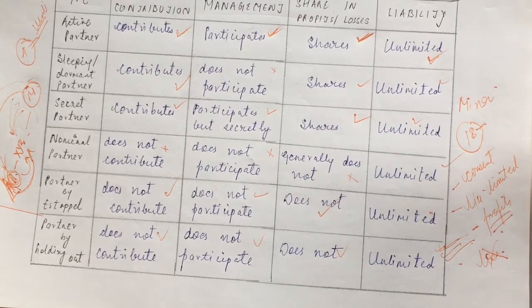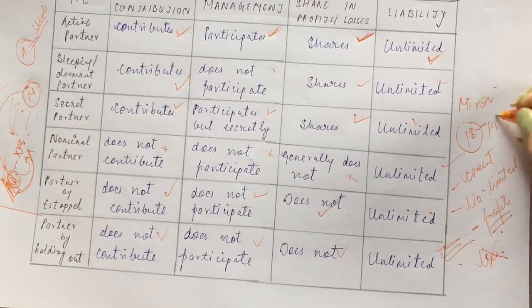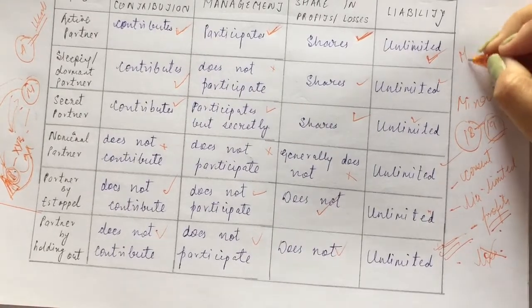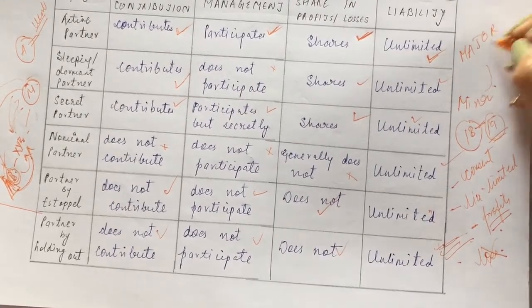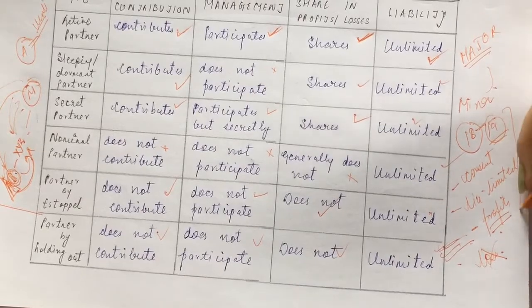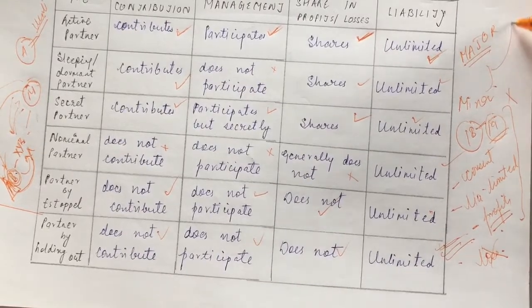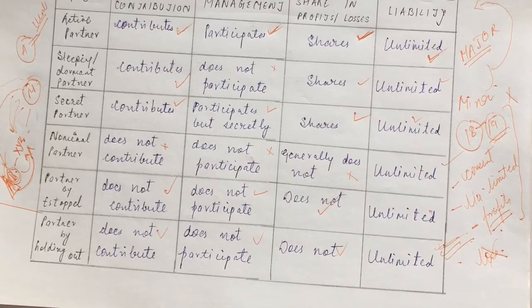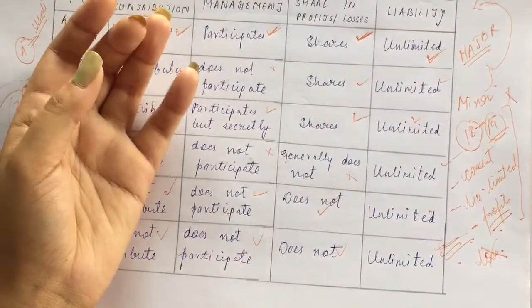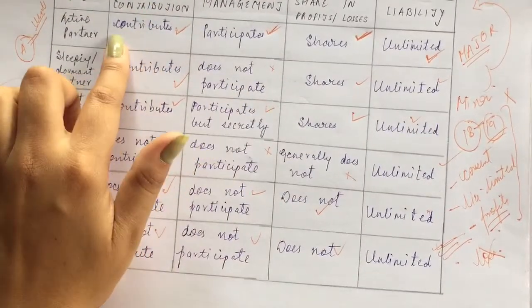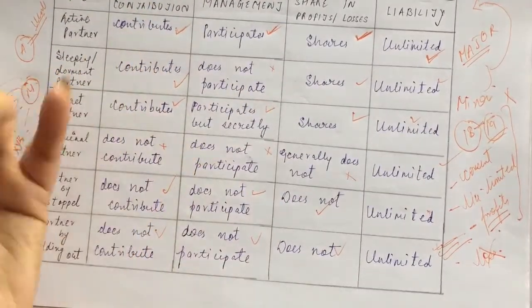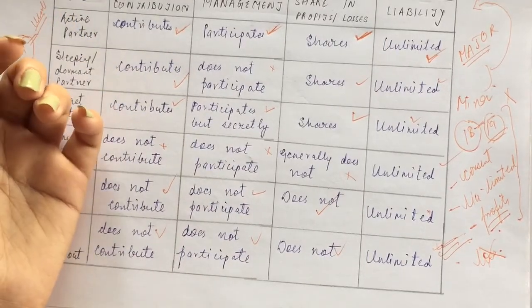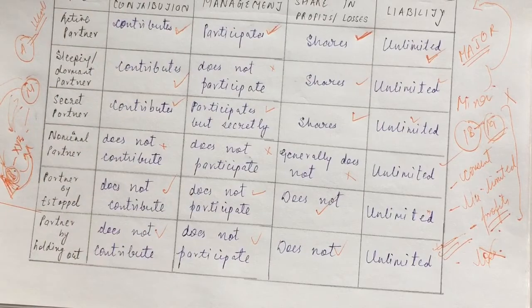When the minor turns 18 and becomes a major, all the special provisions change. Their liability becomes unlimited, and they can actively participate as a full partner — whether active or sleeping, depending on their choice. All the limited terms and conditions are reversed once they attain majority.